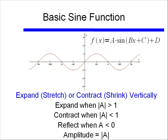Here's a summary of the different things we can do with a. The amplitude will either expand or contract our function vertically. If the absolute value of a is greater than 1, the graph will expand or be stretched vertically. If the absolute value of a is less than 1, it will contract or shrink. If a is less than 0, the graph gets reflected over the x-axis. Remember, the amplitude is always equal to the absolute value of a — the number multiplying the sine.